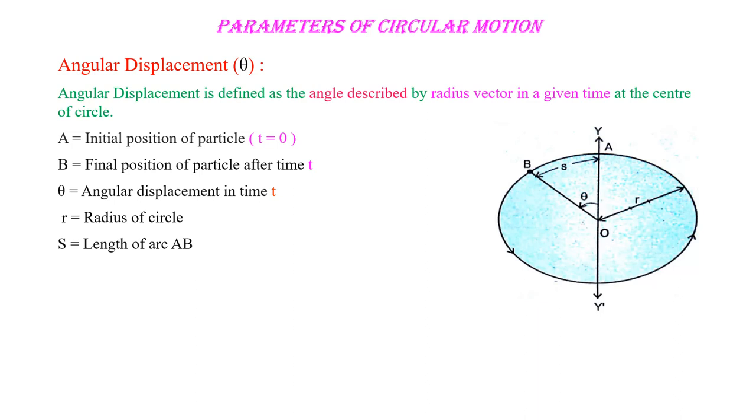So this radius vector, suppose this is the radius vector of this circle R which is denoted by R. So as we know, how we can find out the theta? Yes, theta is nothing but the ratio of arc S to radius R.